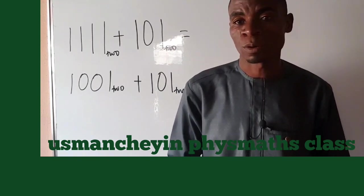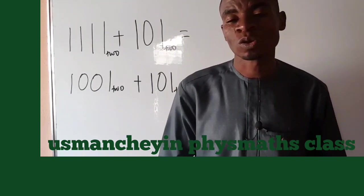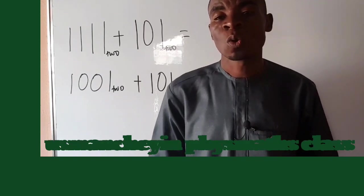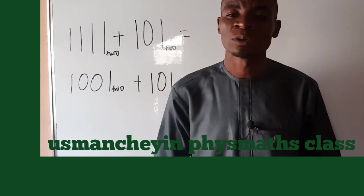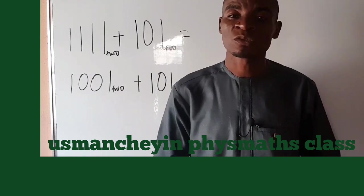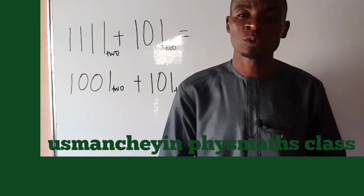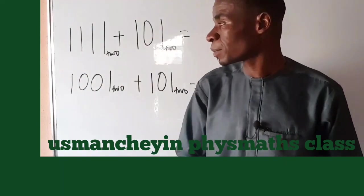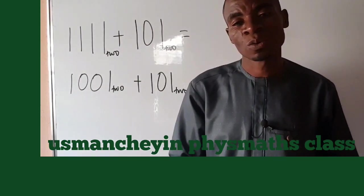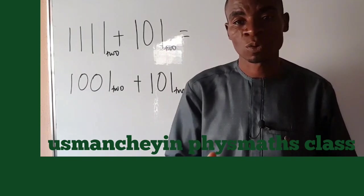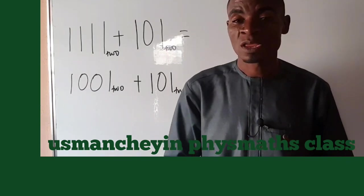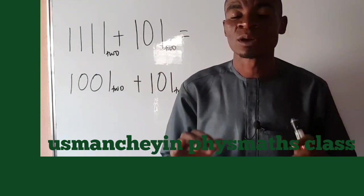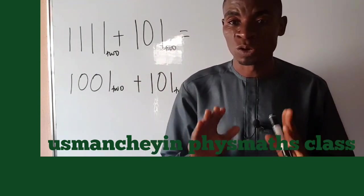Before we go into the whole story, it's important for us to look at what binary is all about. Binary simply means base two. That means we'll be dealing with zero and one. So if you look at the example here, it's all zero, one, zero, one, zero, one. We cannot have two in the numbers. The base cannot appear in the question.